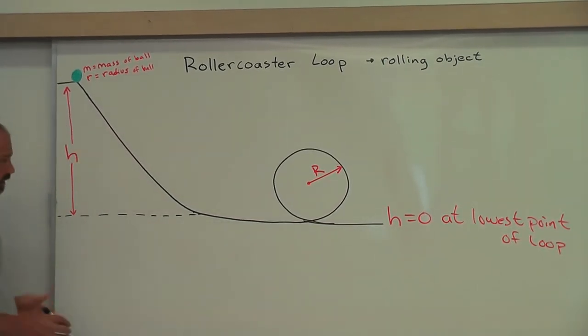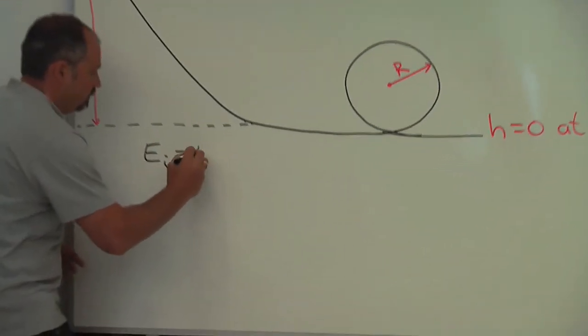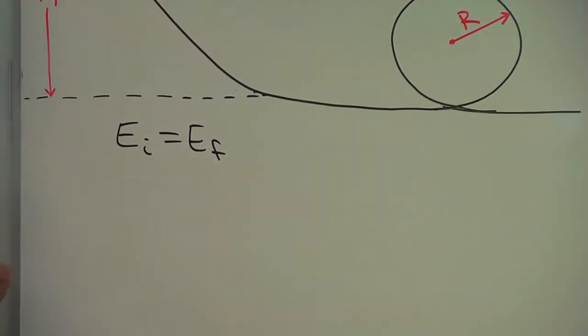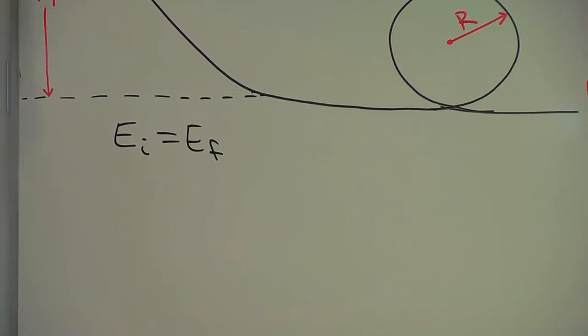So we're going to start with energy conservation. That is, the initial energy equals the final energy. Initially, the ball's not moving, so it has no kinetic energy. It's all potential energy.